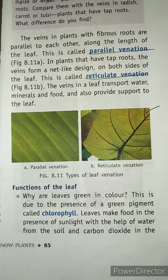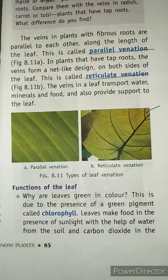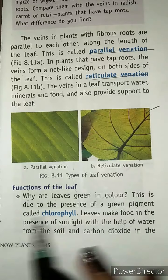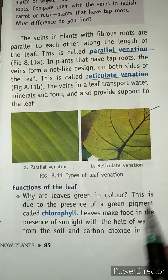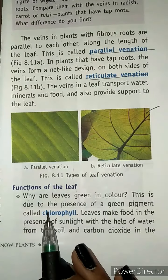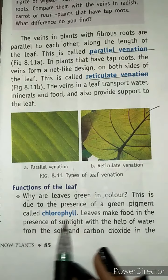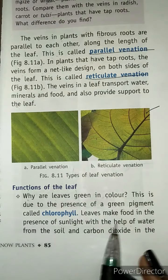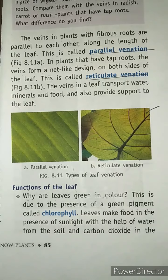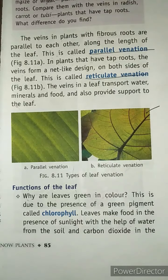Now let's move to the functions of a leaf. First: why are leaves green in color? The green color of leaves is due to the presence of a green pigment called chlorophyll. Leaves make food in the presence of sunlight, using water from the soil and carbon dioxide from the air.